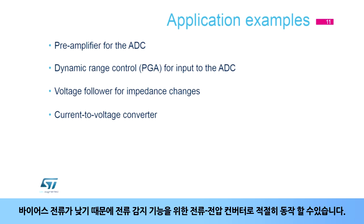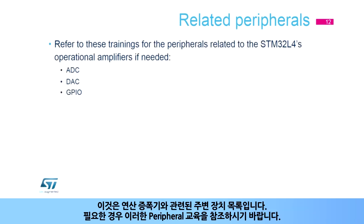Its low-bias current allows it to properly perform as a current-to-voltage converter for the current sensing function. This is a list of peripherals related to the operational amplifiers. Please refer to these peripheral trainings for more information if needed.